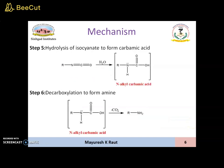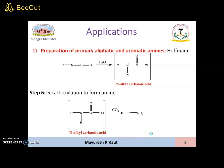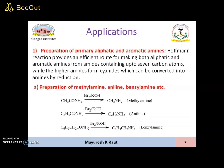Step 5 is nothing but the hydrolysis of isocyanate to form carbamic acid. The isocyanate formed in step 4 will be hydrolyzed to give N-alkyl carbamic acid. The last step is decarboxylation to form amine. There will be a loss of CO₂ from this N-alkyl carbamic acid, which will further form the final product, that is amine.